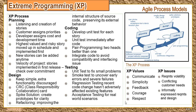Next we move to the third phase, which is coding. In coding, we have pair programming and unit testing. Pair programming means that on a single computer, two people work together — one person codes while the other evaluates and reviews the code. This is done for about half an hour, after which the positions are switched. This is a good practice so that error-free code can come out.